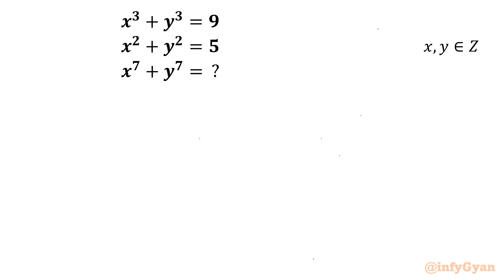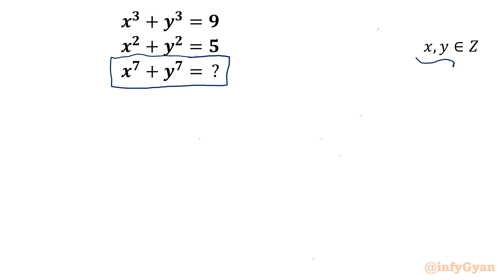Welcome back to Infigyan, my dear friends. Today we are going to solve one very interesting Diophantine system of equations. We have x³ + y³ = 9 and x² + y² = 5. We have to evaluate the expression x⁷ + y⁷, where x and y belong to integers.